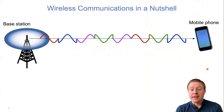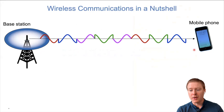Wireless communication, in a nutshell, is the concept of sending something from one place to another — from a base station to a mobile phone, for example. What we are sending is a sequence of bits, for example zeros and ones.